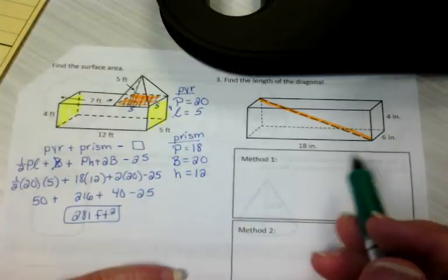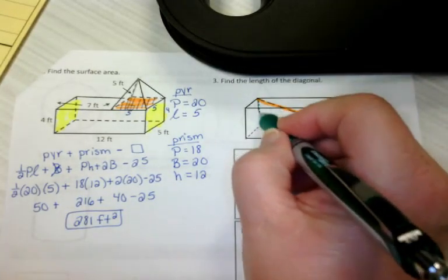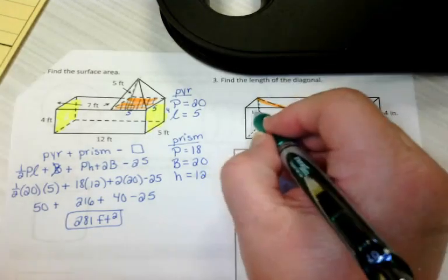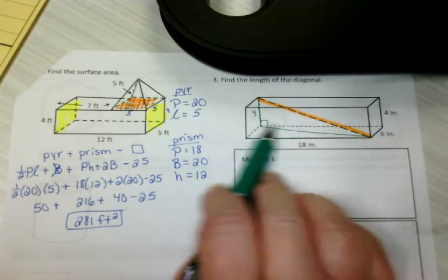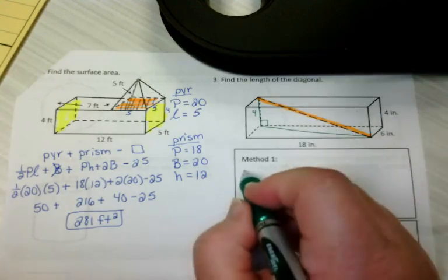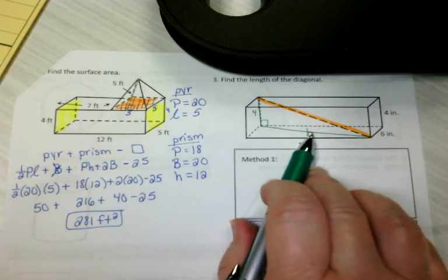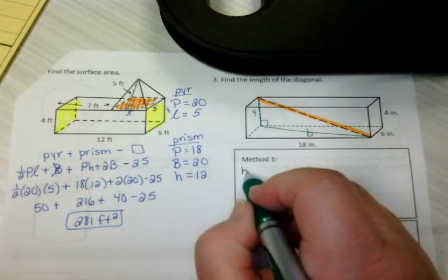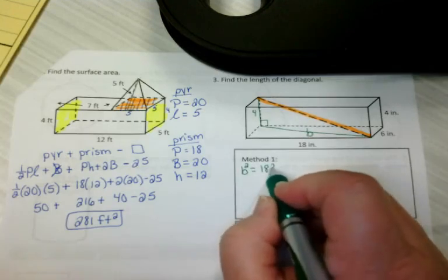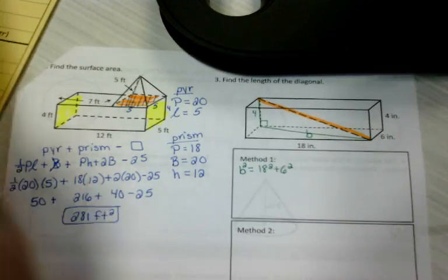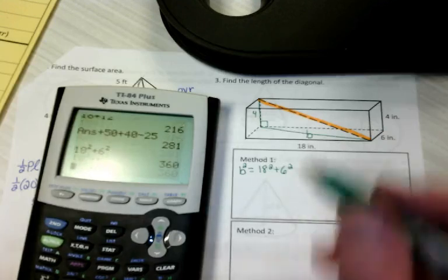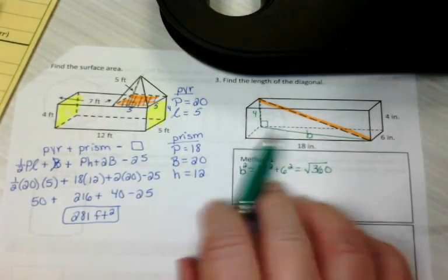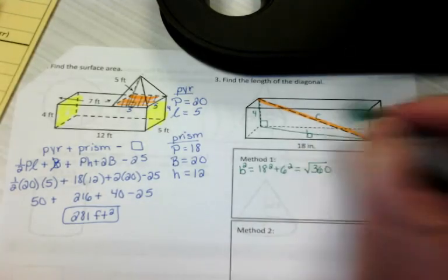So one way is, I'm going to find a way to make that orange line the hypotenuse of a right triangle. One of the legs of the right triangle is the height, which is 4. And the other leg is this diagonal of the base. So I'm going to find, let's call this B, just to give it a name. I'm going to find B by using my 18 and my 6 to do that right triangle. So B is going to be the hypotenuse of the triangle that has legs of 18 and 6. So we're going to go 18 squared plus 6 squared is the square root of 360.